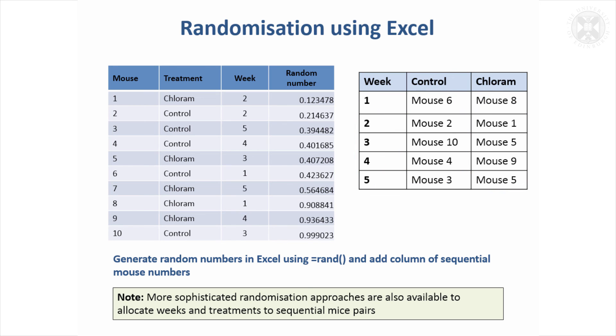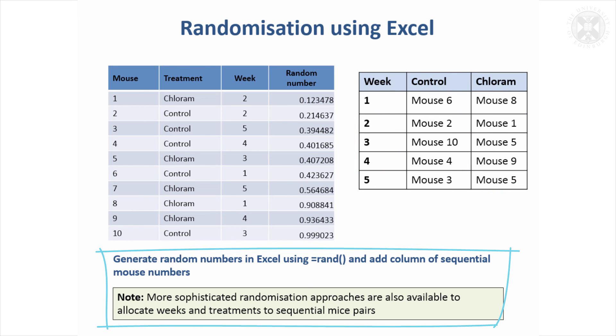So that would then get called a randomised block design. It's a bit like the two-level design, except the second factor isn't of interest to us — we just want to make sure it doesn't affect the results.